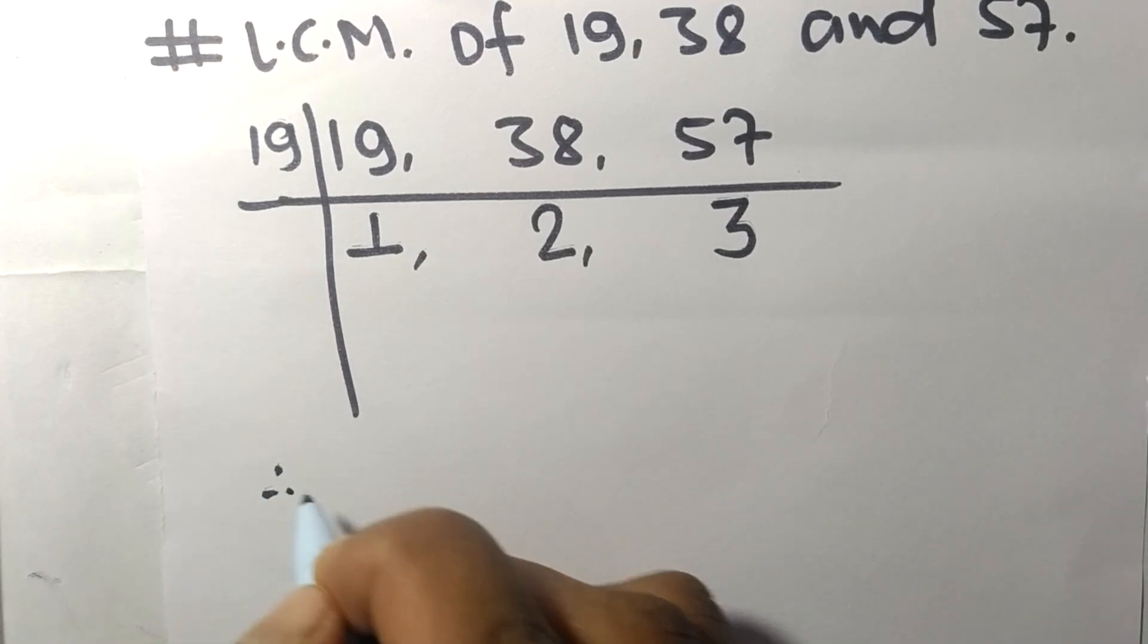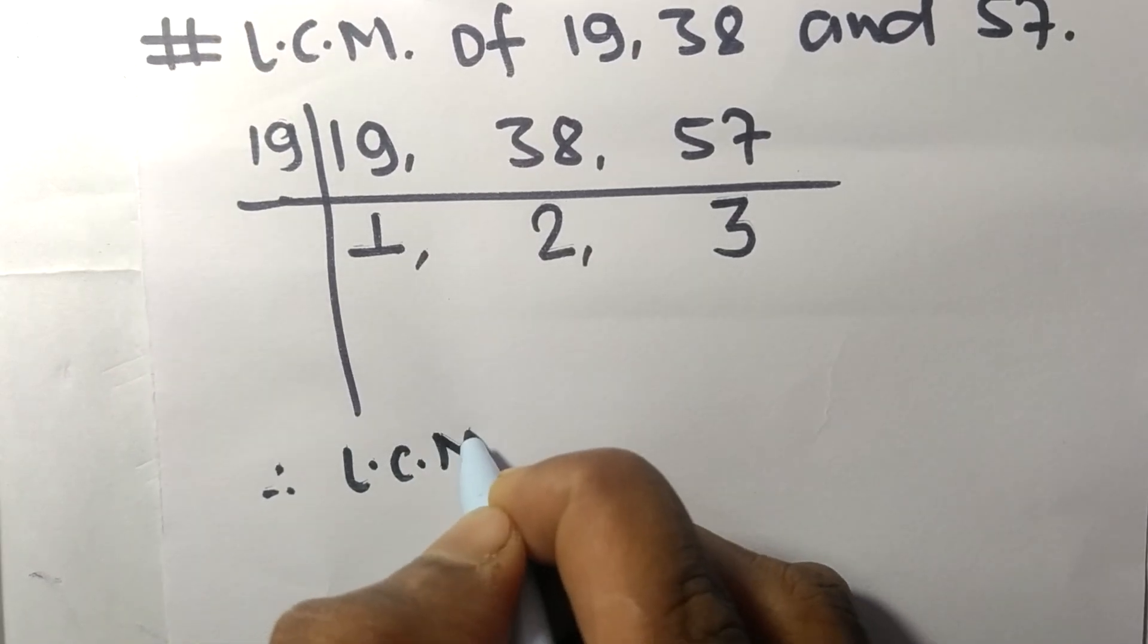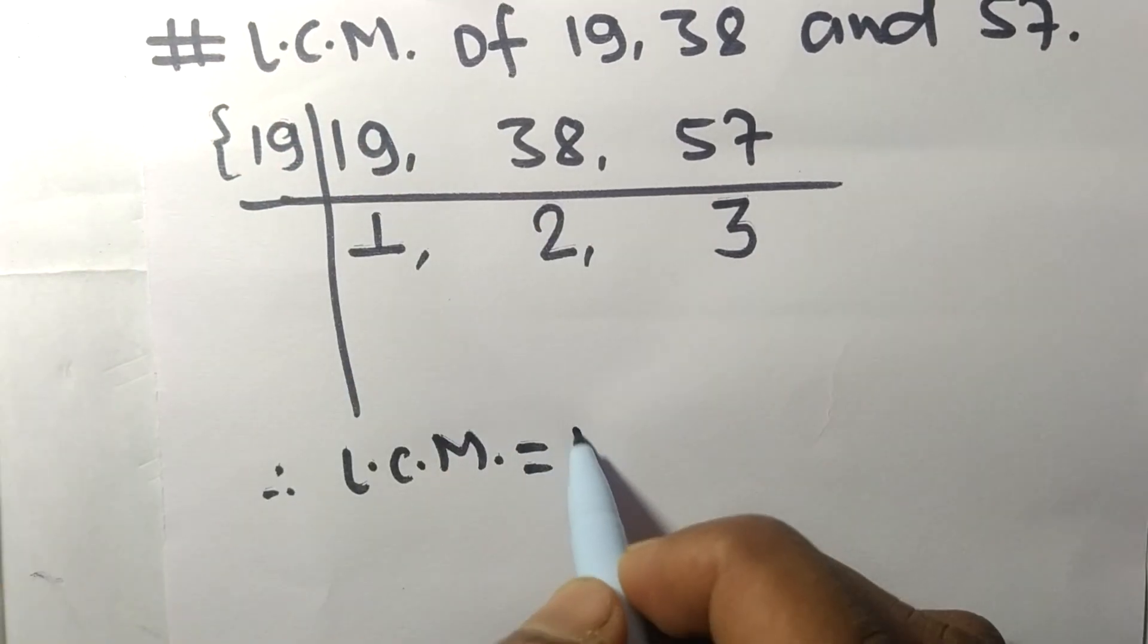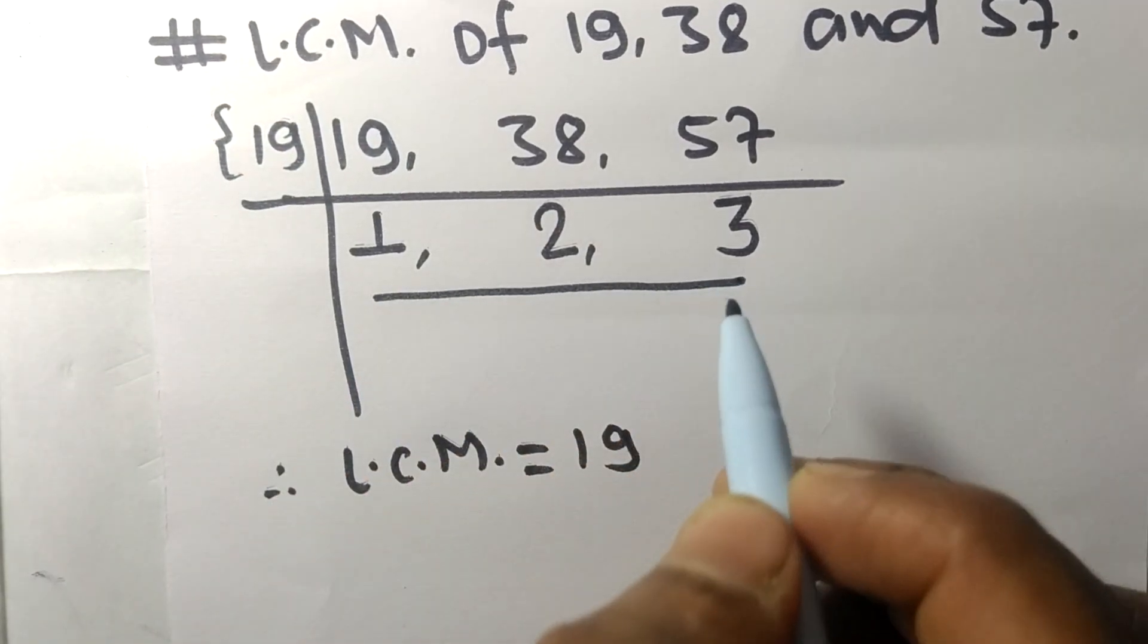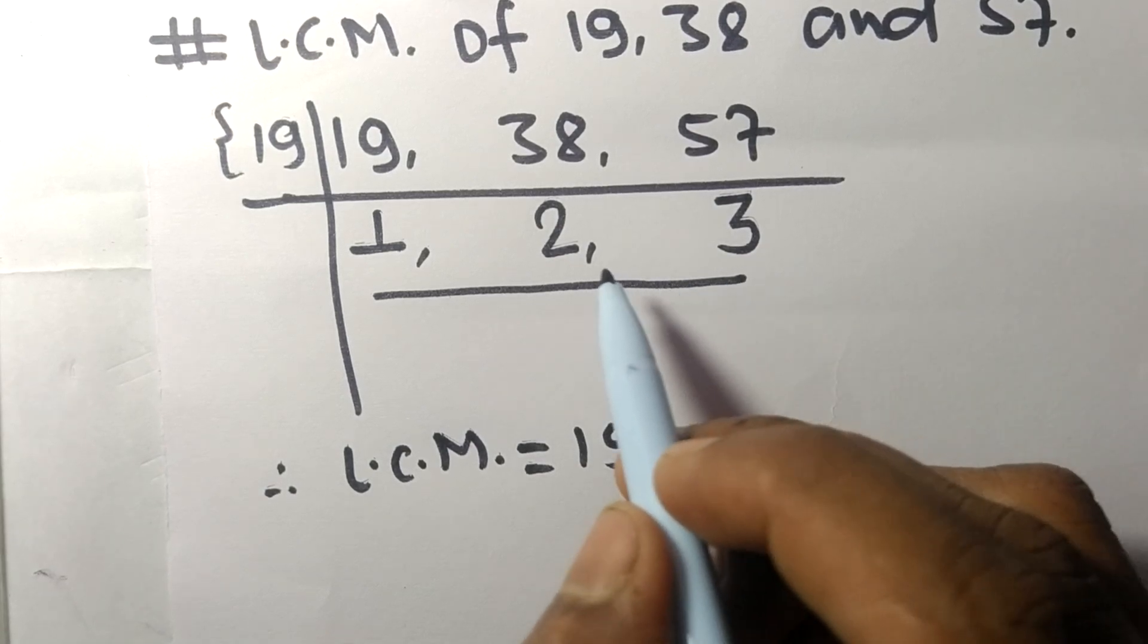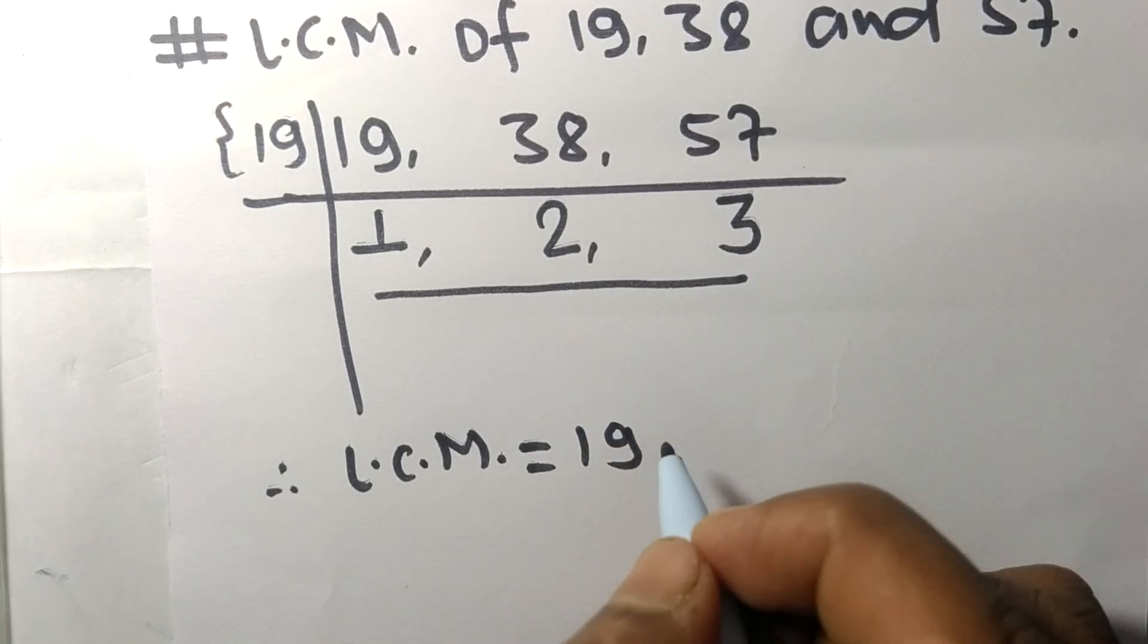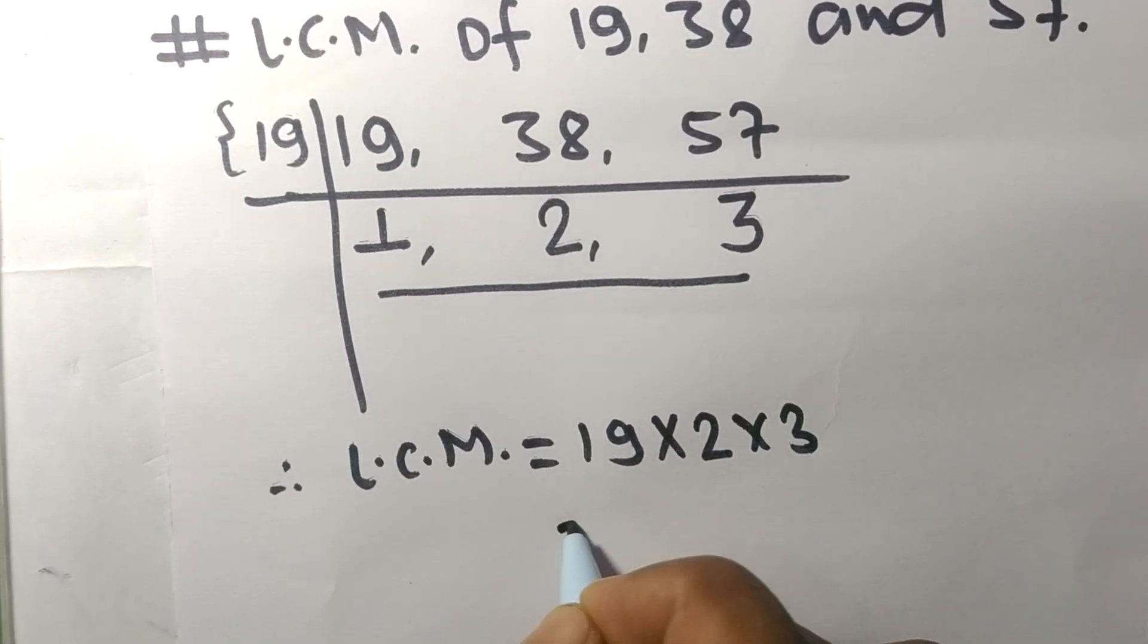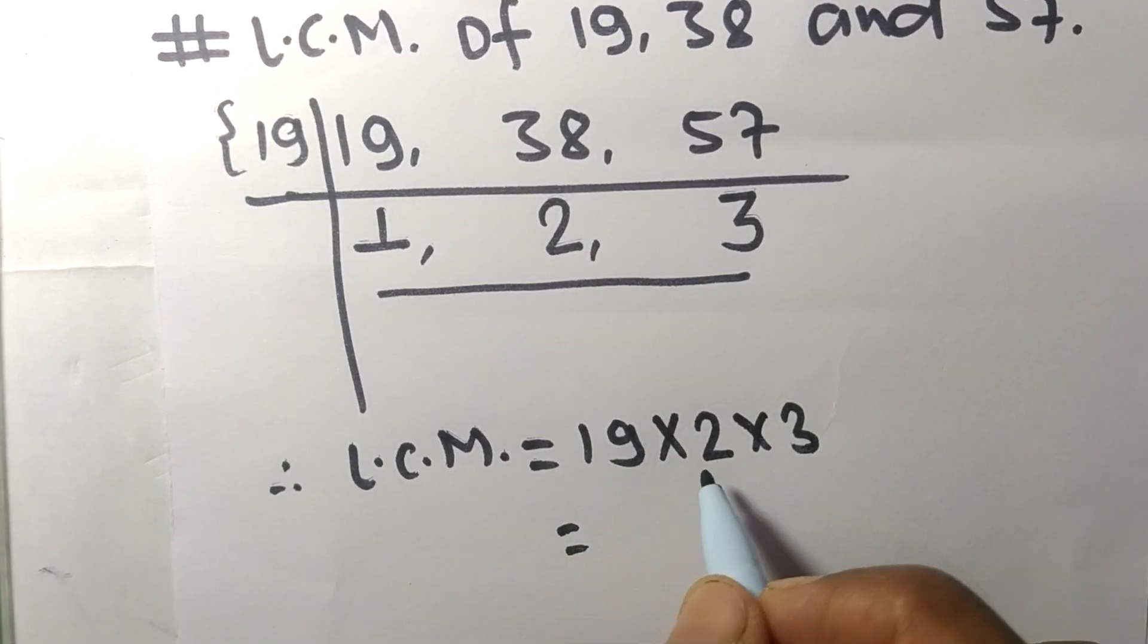Therefore its LCM is equal to—from this side it is 19, from this side we choose the numbers greater than 1, that is 2 and 3, so multiply by 2 and 3. So 19 times 2 means 38.